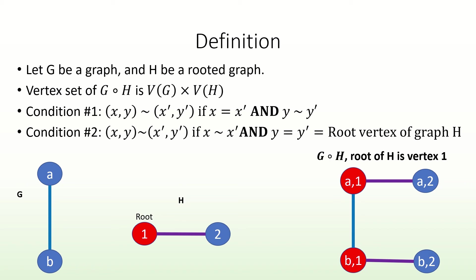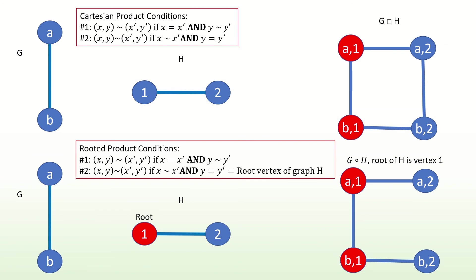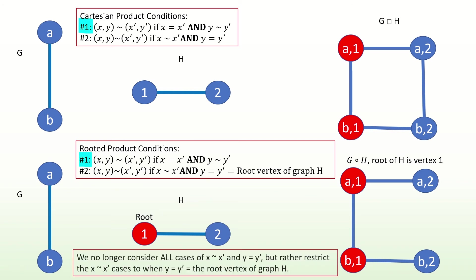This might remind you of the Cartesian product, and for good reason. The rooted product of two graphs is a spanning subgraph of the Cartesian product of those two graphs, and the adjacency conditions for the rooted product are only slightly modified from those of the Cartesian product. Both products have the first adjacency condition, which essentially copies the second graph for each vertex in the first graph. The difference is in the second condition: instead of considering all adjacencies where the right entries are equal and the left entries are adjacent, we only consider those where the right entries are the root vertex and the left entries are adjacent.